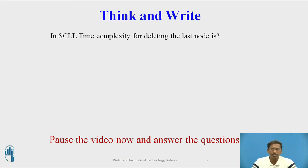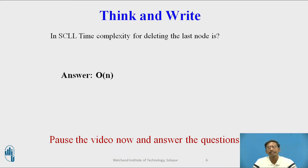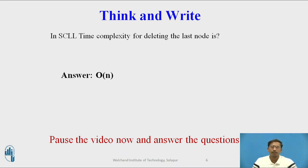You can pause the video and answer this question: in a singly circular linked list, what is the time complexity for deleting the last node? The answer is O(n). You cannot point directly to the last node to be deleted because there is only one pointer — the next pointer. So you have to traverse from the first node to the last node. The time complexity is O(n) because you are traversing n nodes.